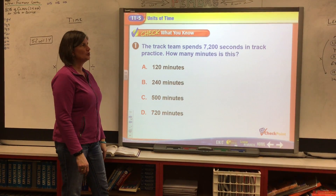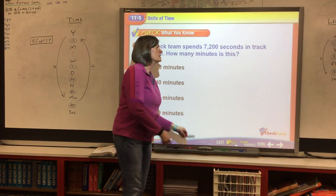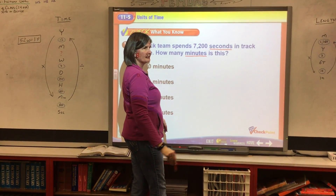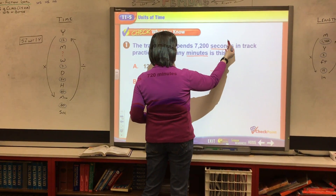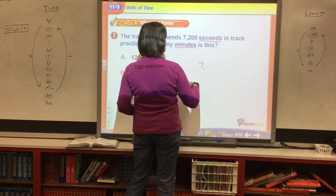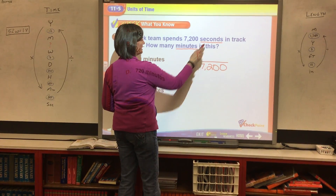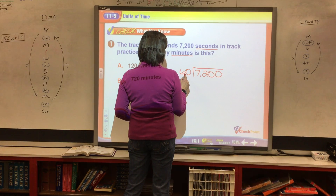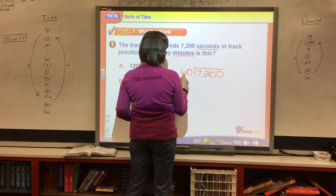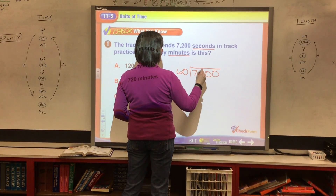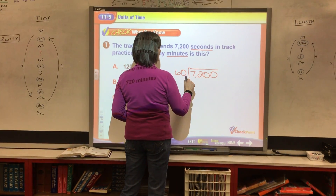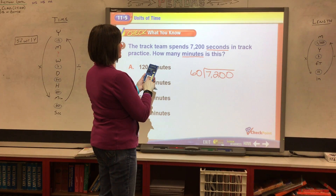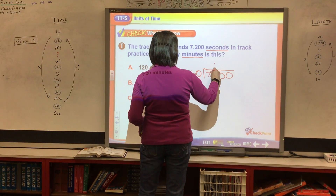The track team spends 7,200 seconds in track practice. How many minutes is this? You see the words seconds and minutes, so you ask yourself: how many seconds are in a minute? 60. Since we are going from a smaller unit to a larger unit, we are going to divide. We'll divide 7,200 by 60. Let's use a calculator on this one — 7,200 divided by 60 equals 120 minutes.